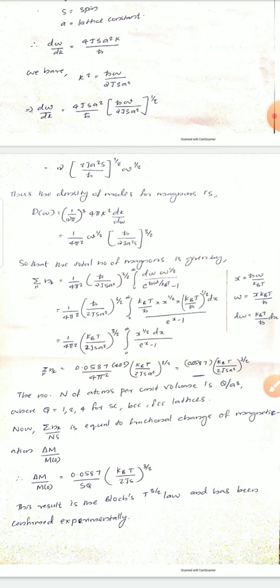The number N of atoms per unit volume is given by q/a^3, where q is 1, 2, or 4 for simple cubic, BCC, and FCC lattices. Then sigma n_k / NS equals the fractional change in magnetization, delta M / M_0, given by 0.0587 / S times (k_B T / (2JS))^(3/2). This result is called the Bloch T^(3/2) law and has been confirmed experimentally.